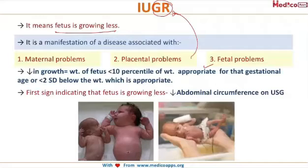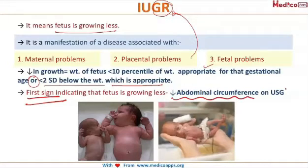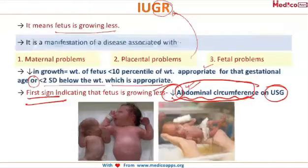...less than the 10th percentile of weight appropriate for that gestational age, or less than two standard deviations below the appropriate weight, we call it IUGR. The first sign by which you can detect IUGR is the abdominal circumference measurement on ultrasound, which will be decreased in cases of IUGR. Abdominal circumference is the first parameter on ultrasound to decrease in IUGR.